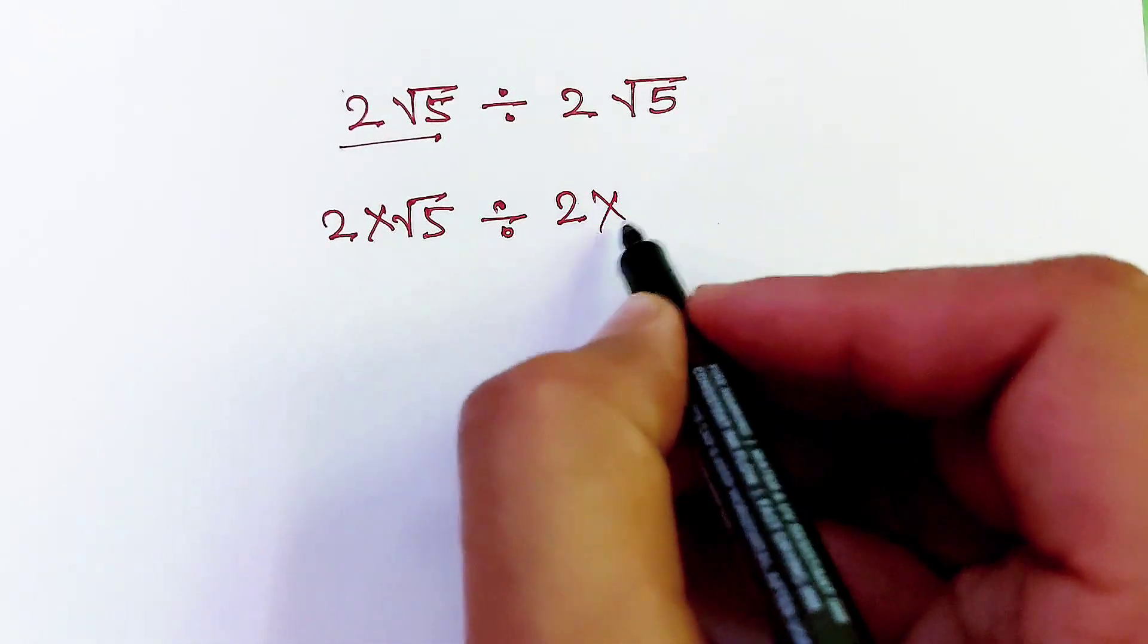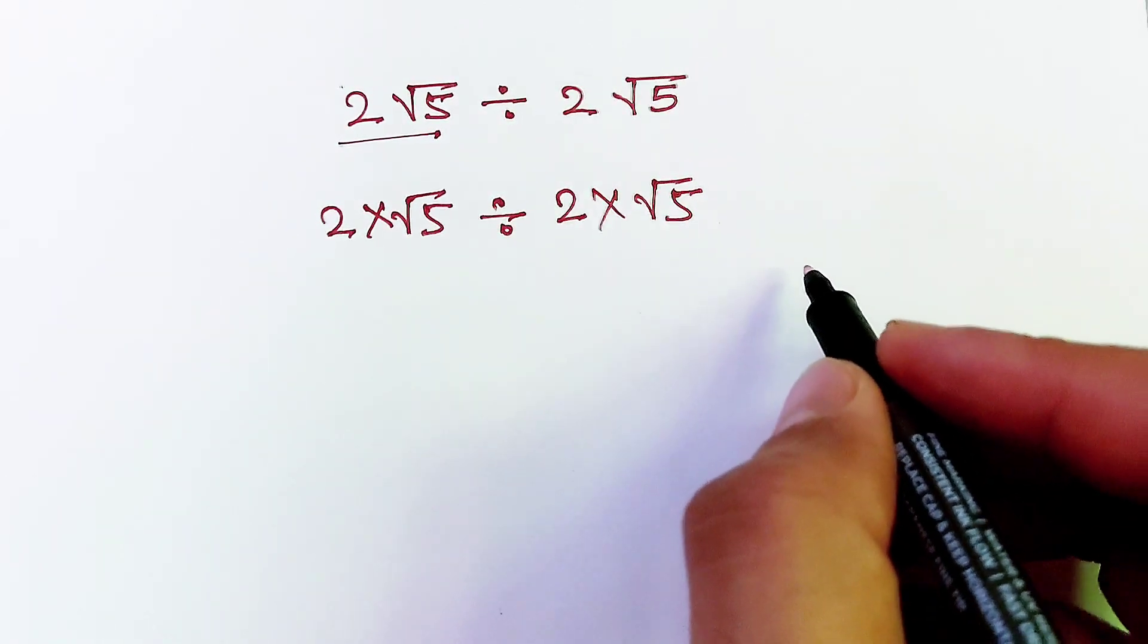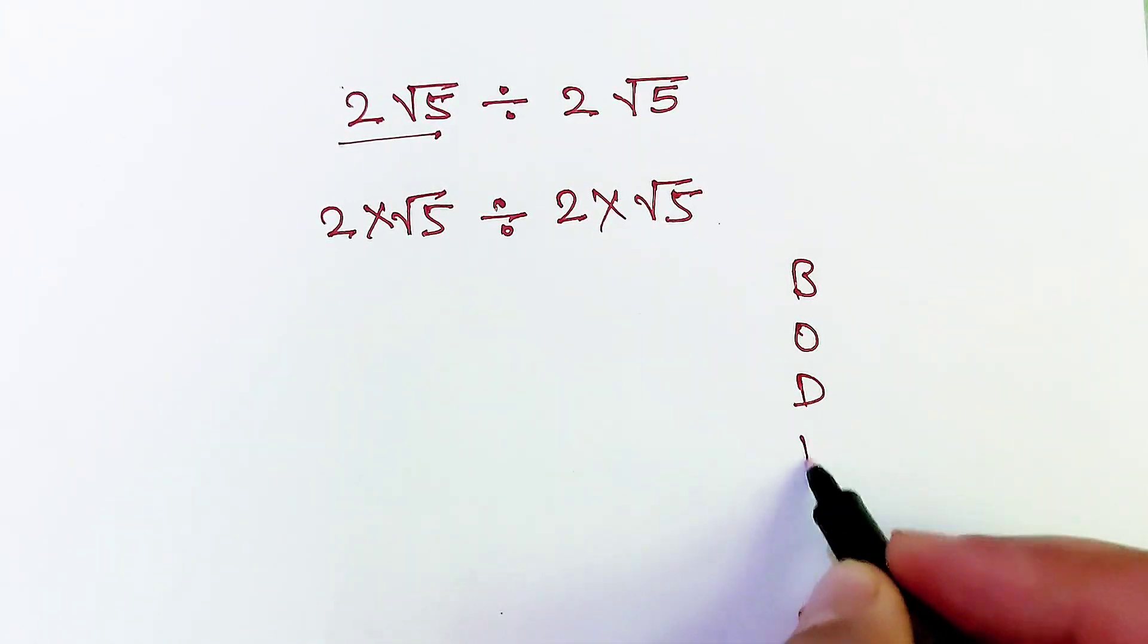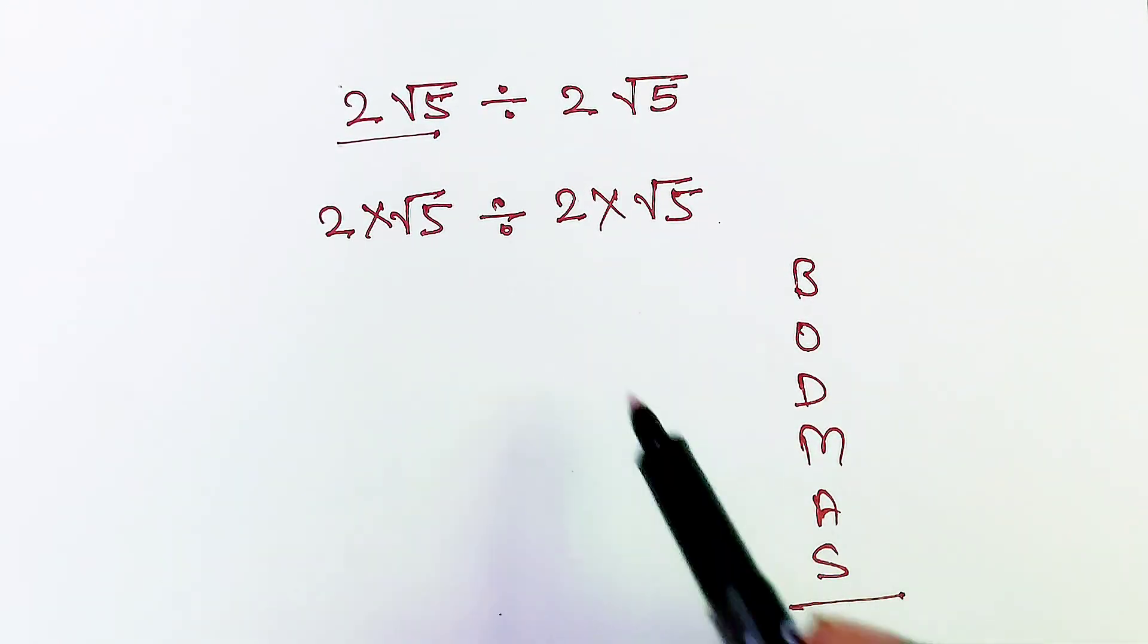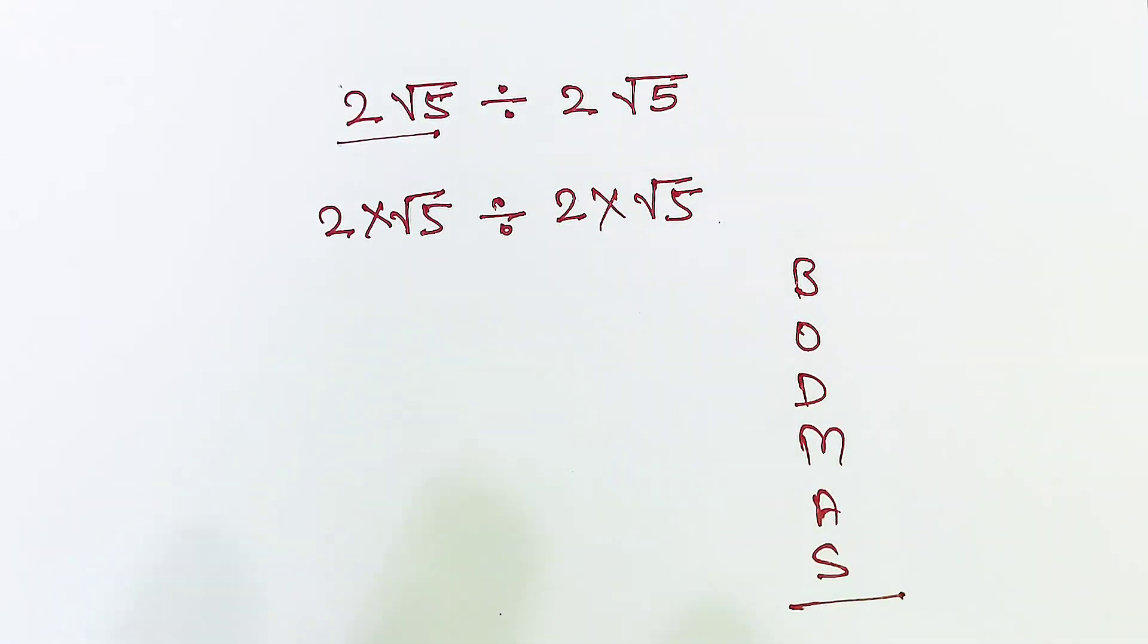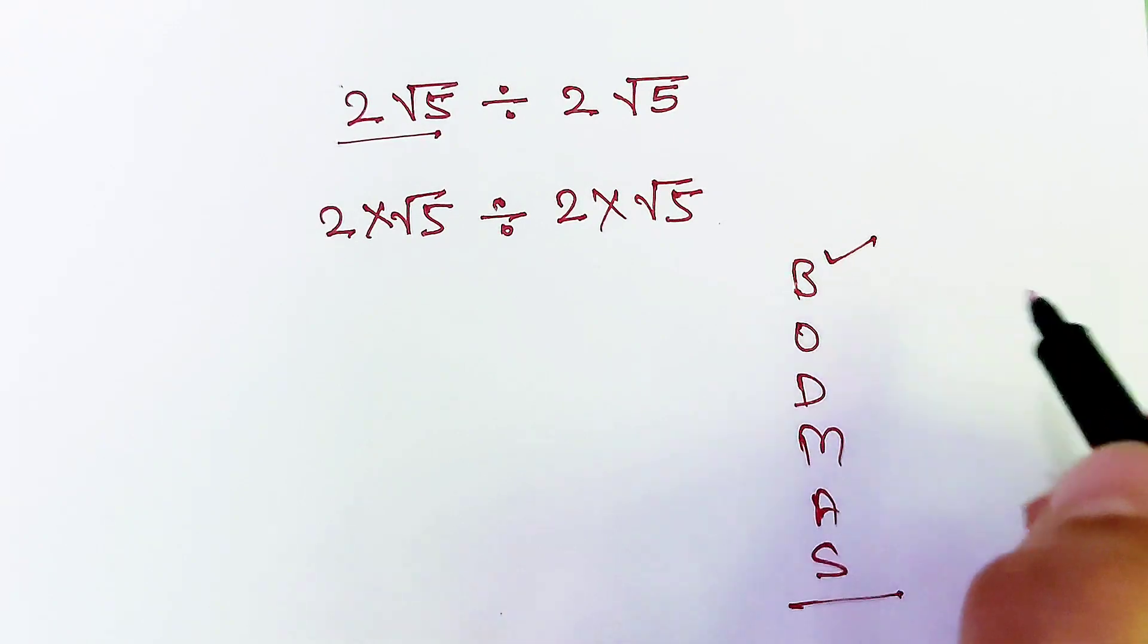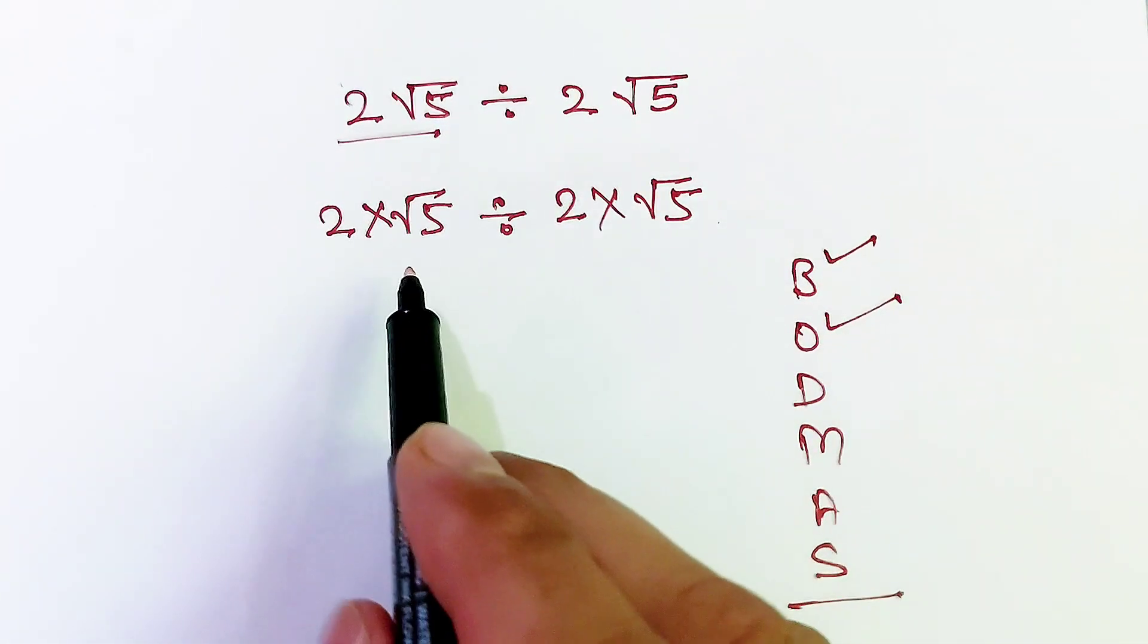Now here we will apply the BODMAS rule, which is used in solving this type of expression. Here, first we solve brackets, which is not here. Second, we will solve order or degrees, which is not here.